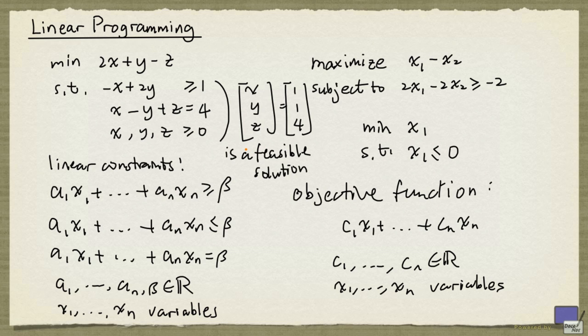The set of all the feasible solutions to a linear programming problem is called the feasible region.